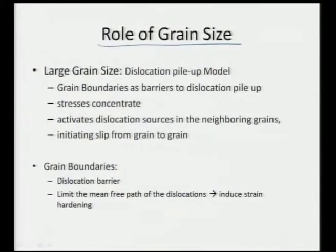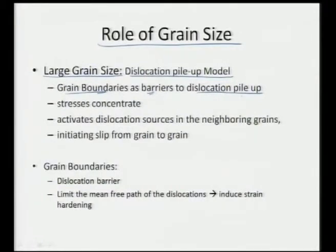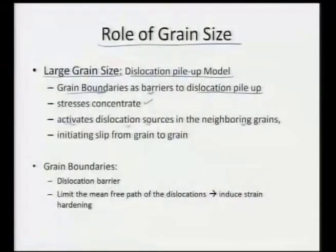What is the role of grain size? There are basically two models which describe it. For large grain size, the dislocation pile-up model applies — pile-up occurs due to the presence of grain boundaries, and grain boundaries act as a barrier from which dislocation pile-up is accommodated, and that in turn will activate dislocation sources in the nearby grains. Once we have a grain boundary acting as a barrier to dislocation pile-up, it starts inducing stress concentrations.